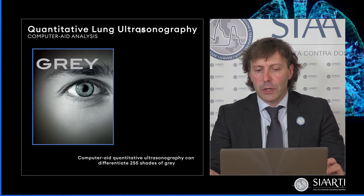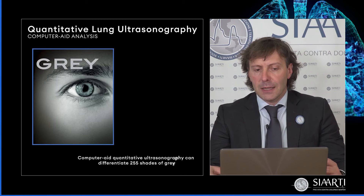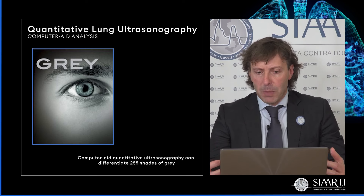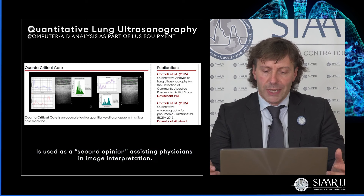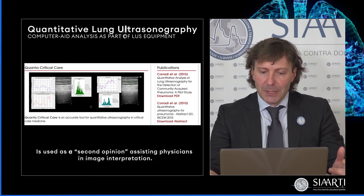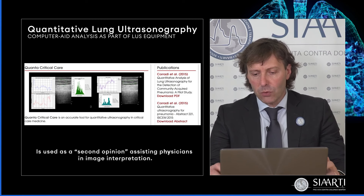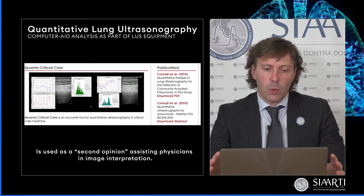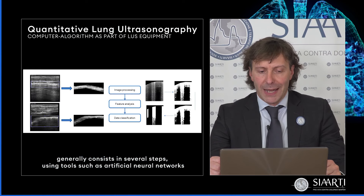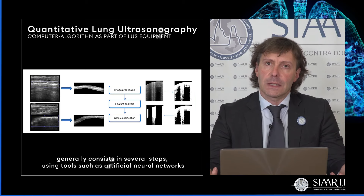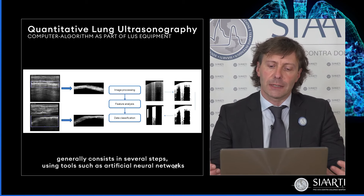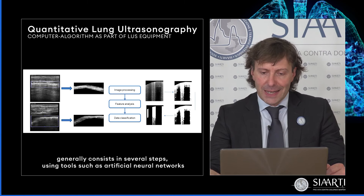Ed è questo il motivo per cui noi ci siamo determinati a introdurre nei software ecografici e negli apparecchi di ultrasonologia clinica degli algoritmi in grado di fungere da supporto diagnostico al clinico nell'interpretazione delle immagini. Questo approccio consiste fondamentalmente di tre processi: uno è la lavorazione dell'immagine, l'estrazione del parenchima polmonare e l'identificazione della linea pleurica; il secondo è un'analisi tessutale; e infine la classificazione attraverso network di intelligenza artificiale.